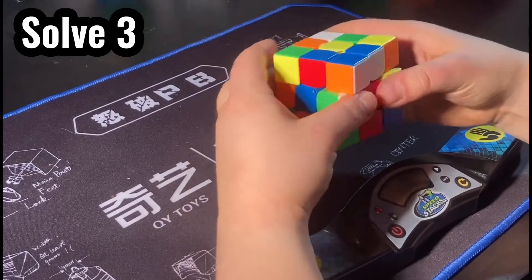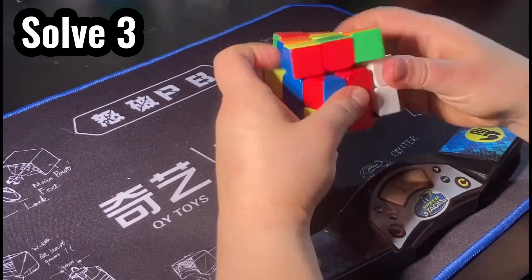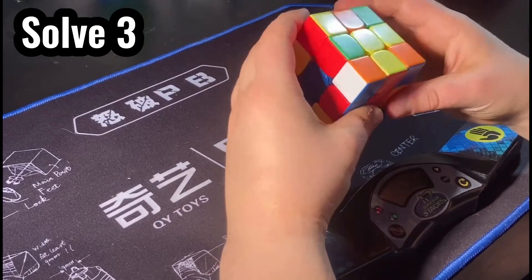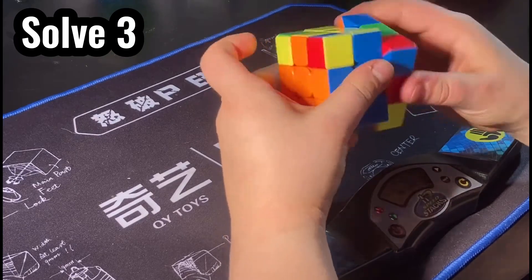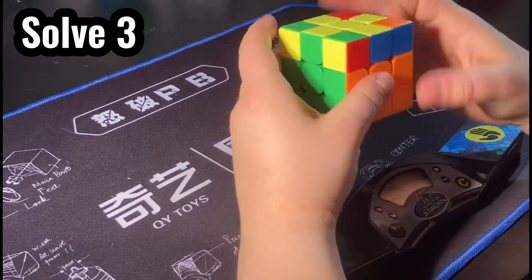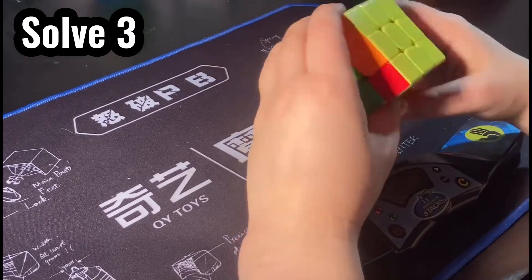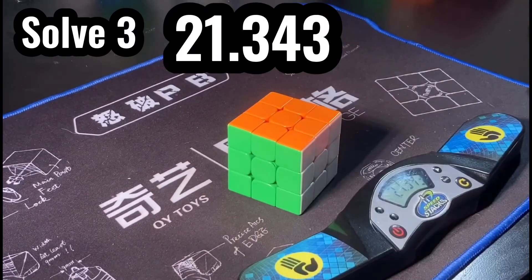Okay, so I'm starting my third solve here. As you can see, an okay cross, not that good though. I am pausing quite a bit, which I was kind of annoyed at because, unfortunately, that cost me a bit. As you can see, the pairs aren't the luckiest because none of them were really that good. An okay OLL, not the best. The second part of the OLL is pretty good. And finally, we have an A perm for a total of 21.343.